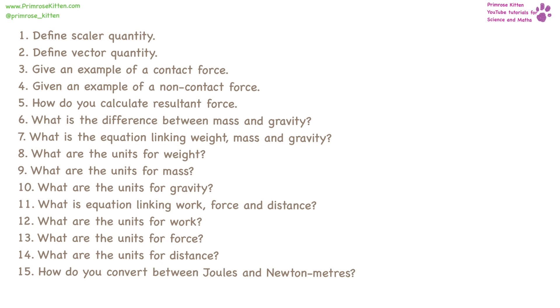A scalar quantity is just a number. Whereas a vector quantity is a number with direction.